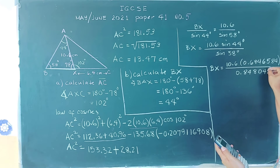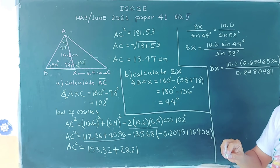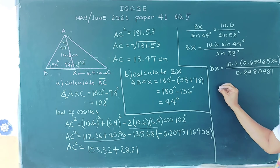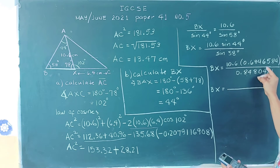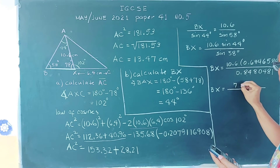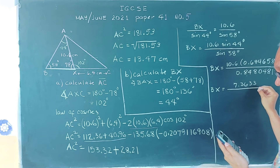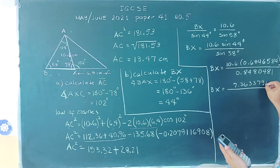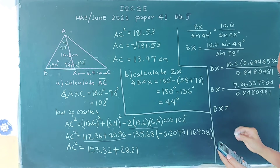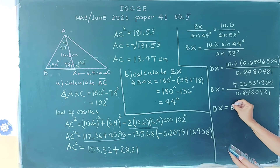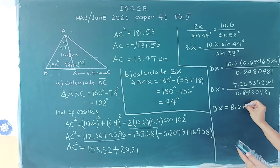Computing this: 10.6 times sine 44, divided by sine 58. BX is approximately 7.3637 divided by — rounding through the calculation — BX equals 8.68 centimeters.